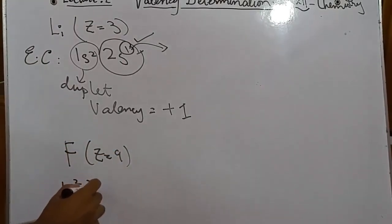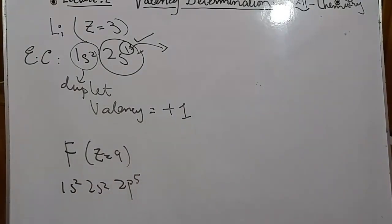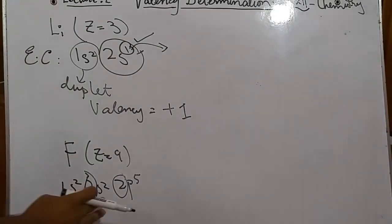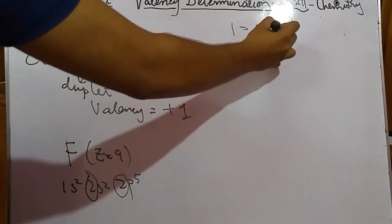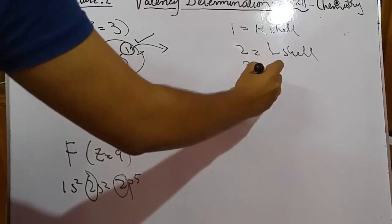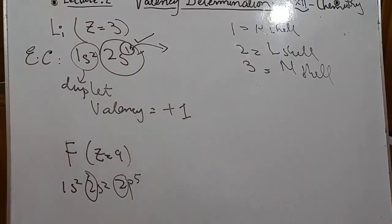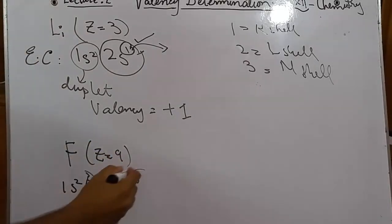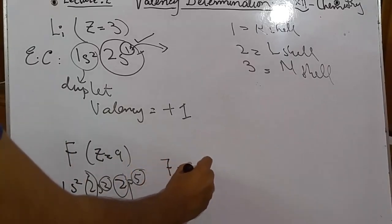Let's move to the next element: fluorine. The electronic configuration of fluorine is 1s² 2s² 2p⁵. When identifying the outermost orbit, the coefficient must remain the same — 2s and 2p both fall under the L shell. The coefficient 1 represents the K shell, 2 represents the L shell, 3 represents the M shell, and so on. Since the outermost orbit is 2, we add both: 2 + 5 = 7 electrons in the valence shell.